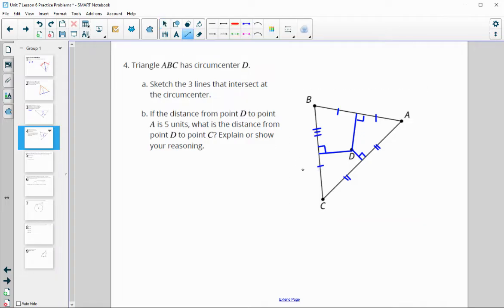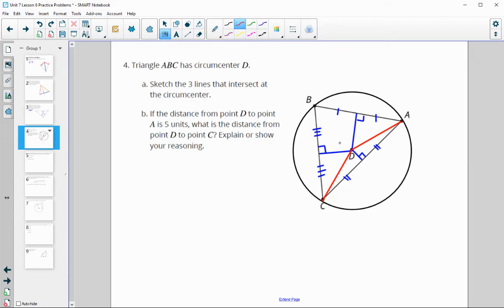The circumcenter is actually equidistant to the vertices because it's the center of the circumscribed circle, the circle that can be drawn around the triangle and hits every vertex at the same time. When this says the distance from point D to A is 5, how far is it from D to C? Also 5, because connecting this point to any vertex would be a radius of that circle. DA is 5, DC is 5, DB would also be 5.